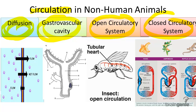Diffusion, such as in the hydra, is just the movement of oxygen, food, and waste across a plasma membrane. Hydra can also circulate water into and out of the body through the gastrovascular cavity, shown here. Simple animals only require this cavity or diffusion for transport. More complex animals use open or closed circulatory systems.